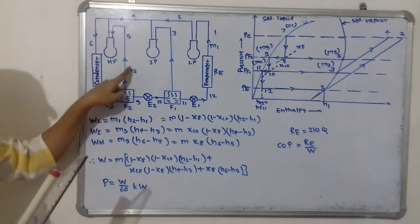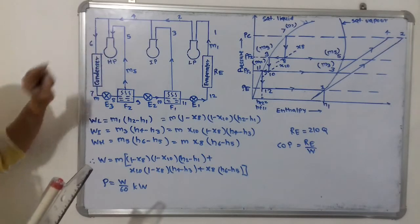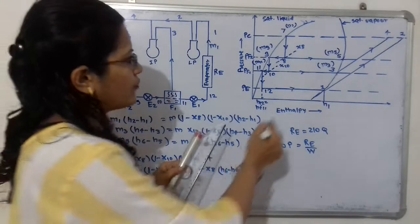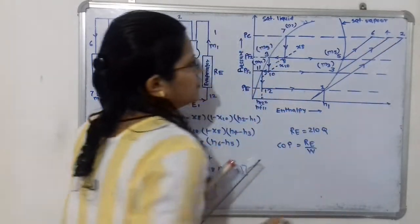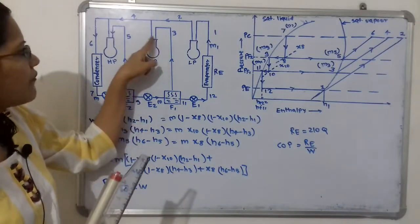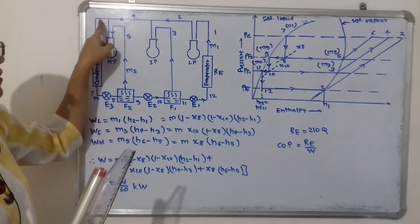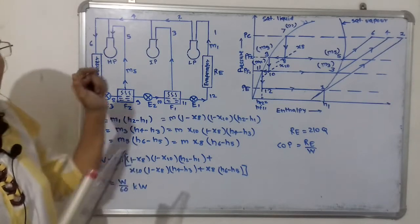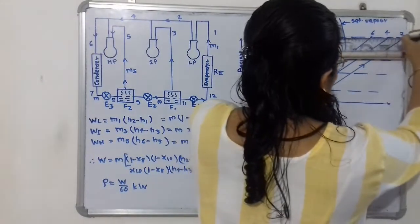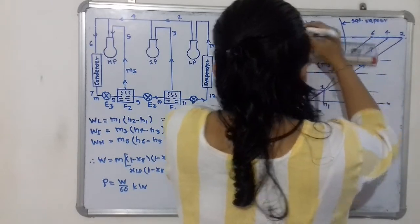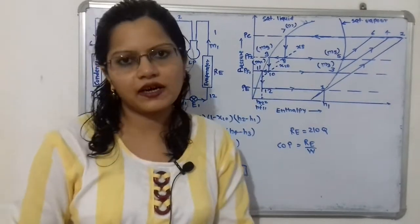Mass M5 enters the high pressure compressor and is compressed isentropically in process 5 to 6 up to condenser pressure PC, giving point 6. After compression, refrigerants at points 2, 4, and 6 are mixed together and enter the condenser, where condensation takes place back to the saturated liquid line, completing the pressure-enthalpy diagram.